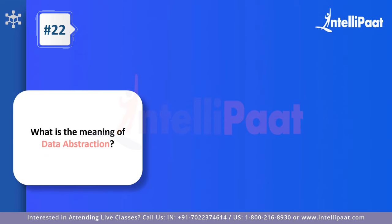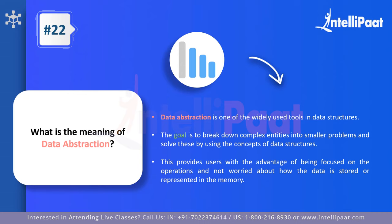Question twenty-two: what is the meaning of data abstraction? Data abstraction is a concept of breaking down complex entities into smaller problems, solving each smaller problem, and eventually solving the entire problem. It is similar to a tree data structure — you start with one entity, break it into two, those into four, and so on. This technique of taking a complex entity and breaking it into simpler, manageable steps is called data abstraction.